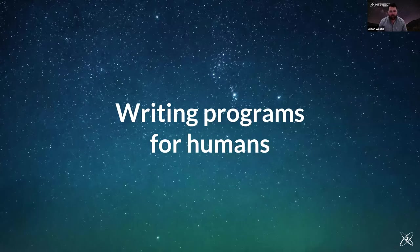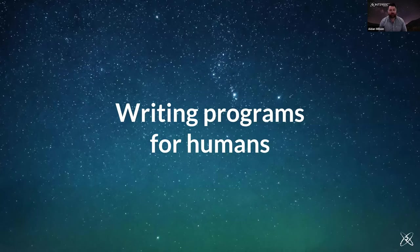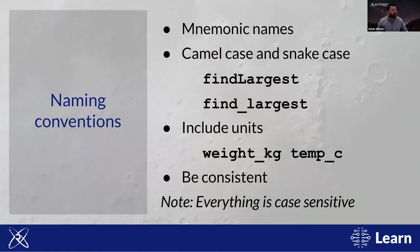While we write programs for computers to execute, we must remember they'll also be read by humans — collaborators, other researchers, or in a publication, and most importantly, probably by yourself in future. There are good habits and conventions to follow to make programs easily readable for humans. Variables should be named in a mnemonic way so you can understand what the program is doing just by reading it. A computer will execute code fine regardless of what variables and functions are named, but humans need to understand them.